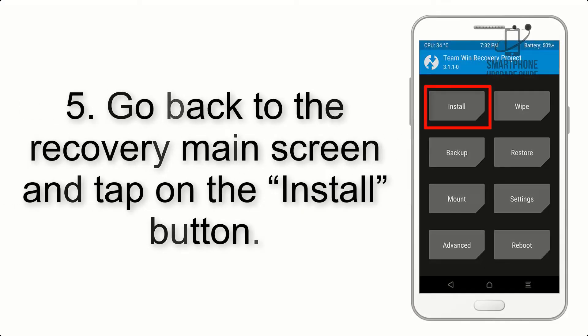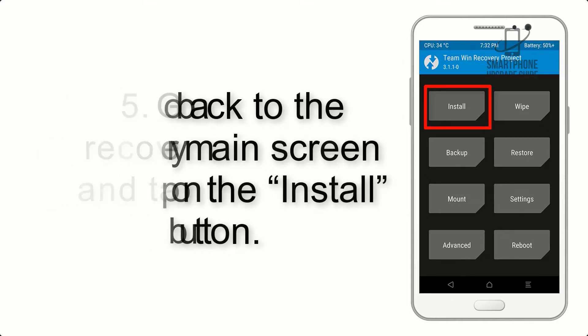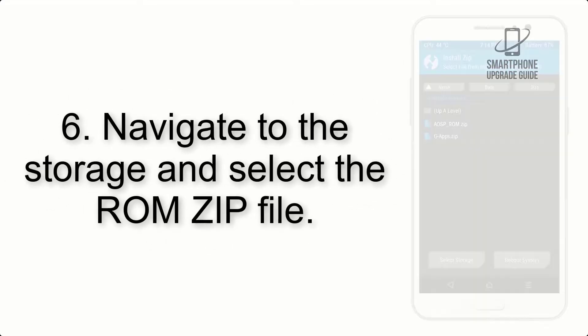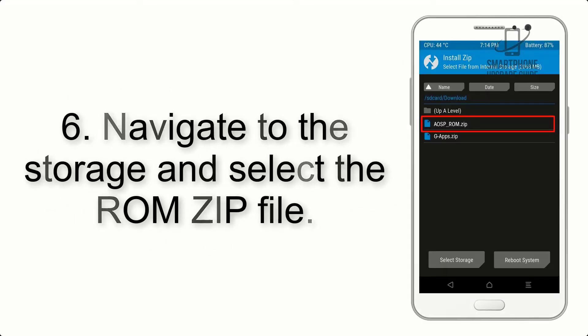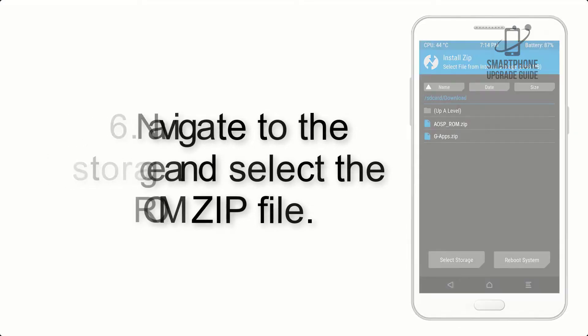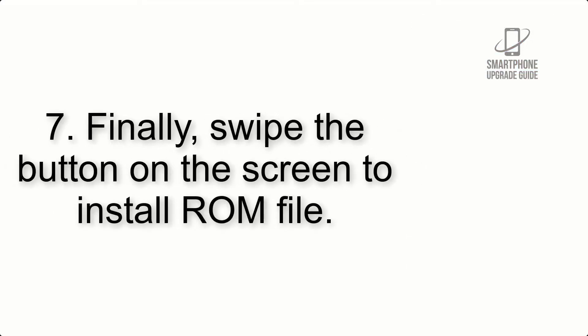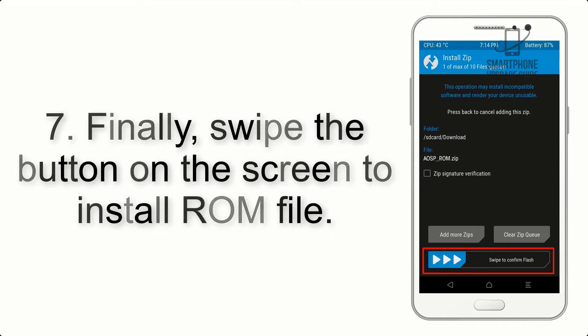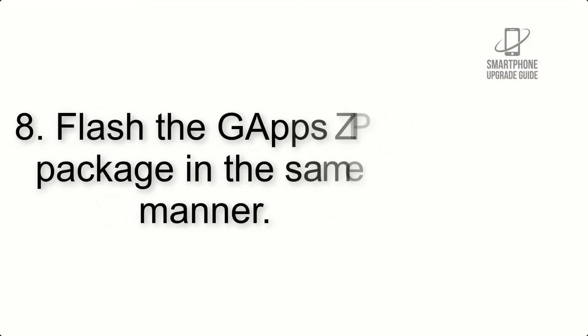Step 5: Go back to the recovery main screen and tap on the Install button. Step 6: Navigate to the storage and select the ROM zip file. Step 7: Finally, swipe the button on the screen to install the ROM file.